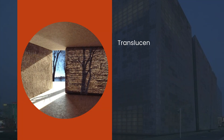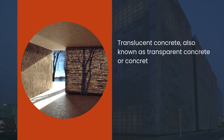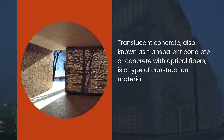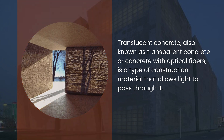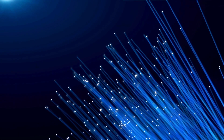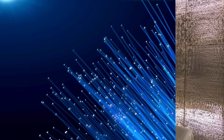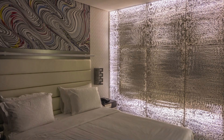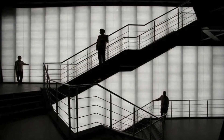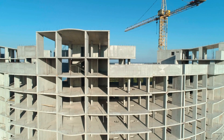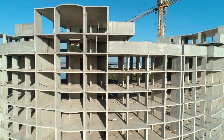What is Translucent Concrete? Translucent concrete, also known as transparent concrete or concrete with optical fibers, is a type of construction material that allows light to pass through it. This is achieved by incorporating optical fibers or other translucent materials that span the length of the concrete. Despite its lightweight and modern appearance, it retains the mechanical properties of traditional concrete, such as compression and load resistance.